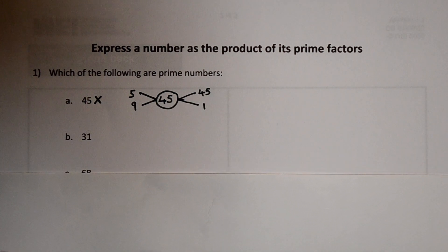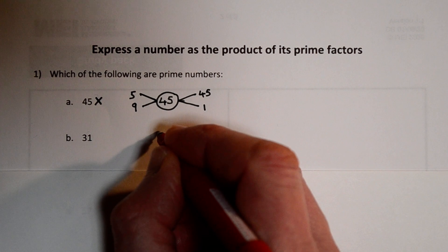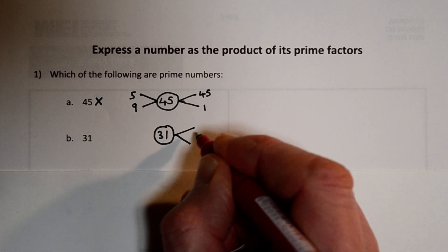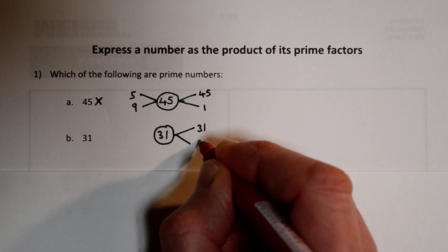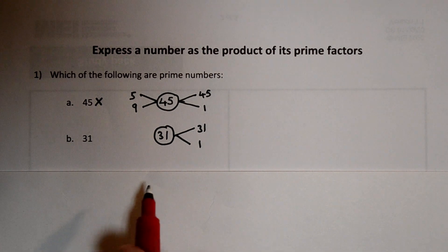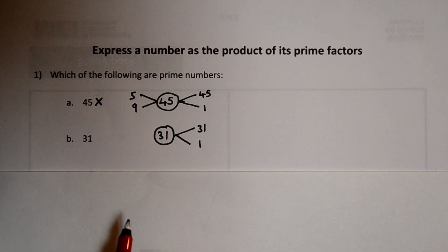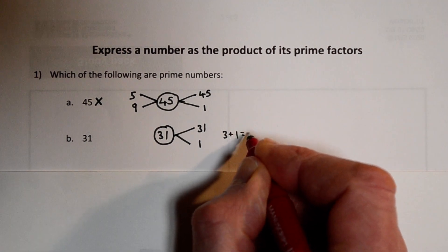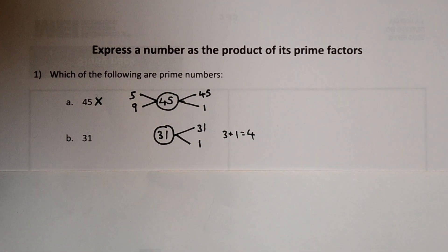What about the next one? What about 31? Same again. What pairs of factors go together? We've always got the first two, the number itself and 1. But are there any others? 2 is not a factor. Is 3 a factor? If we add them up 3 add 1, that's not a multiple of 3.